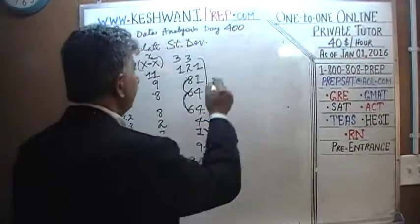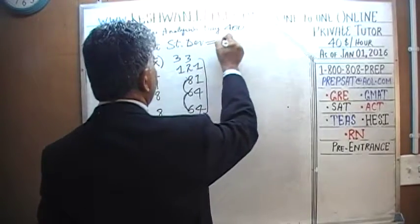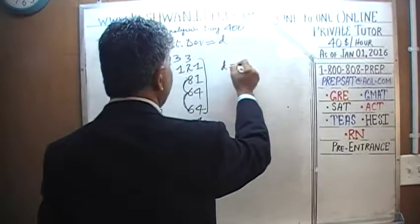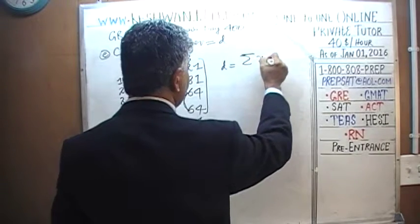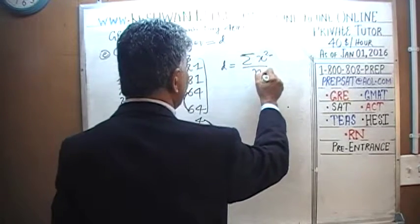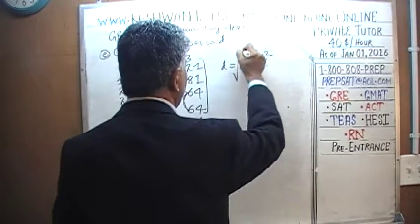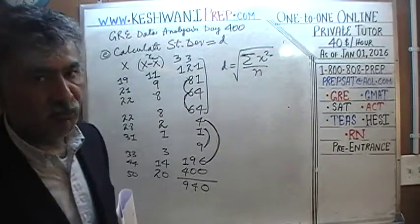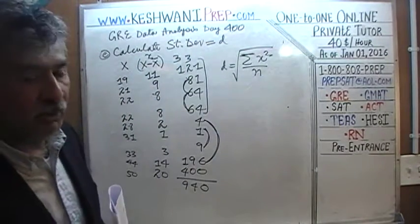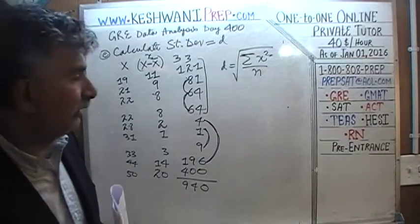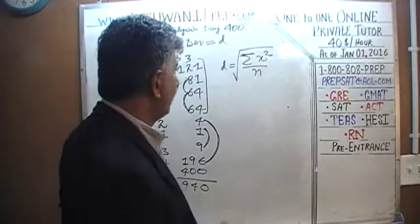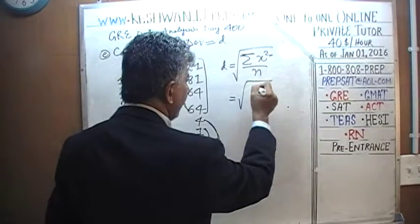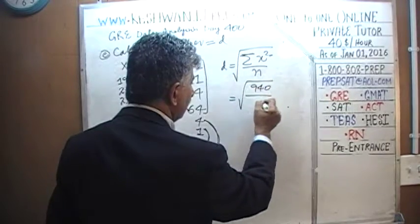The standard deviation formula is the square root of the sum of squared deviations divided by the number of observations. If we don't take the square root, we have the variance — but we want the standard deviation. So it's the square root of 940 over 9.